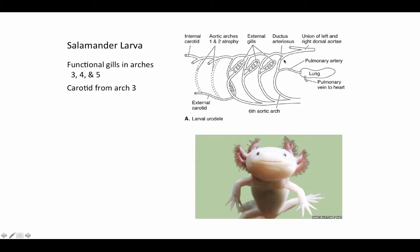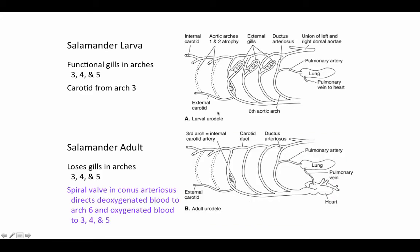The sixth arch has become fully committed to the pulmonary circuit, still giving off a branch to the lung — the pulmonary artery — and we still have the ductus arteriosus connecting the pulmonary artery and the dorsal aorta. In the adult salamander, the gills are lost in most species, and arches three, four, and five become straight shots from the ventral aorta to the dorsal aorta. A valve within the conus arteriosus — the last part of the heart — generally directs deoxygenated blood from the right side toward arch six to go to the lung, and oxygenated blood from the left side through the connector vessels to the dorsal aorta and into the carotid arteries.